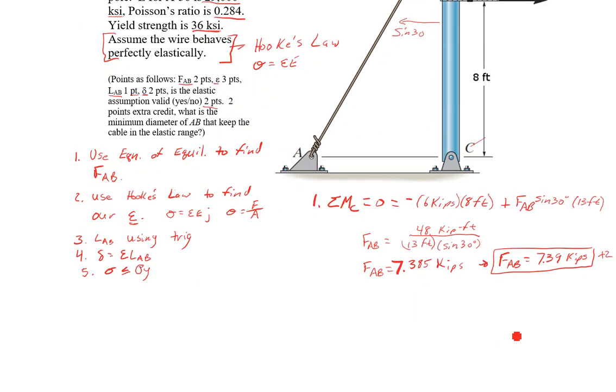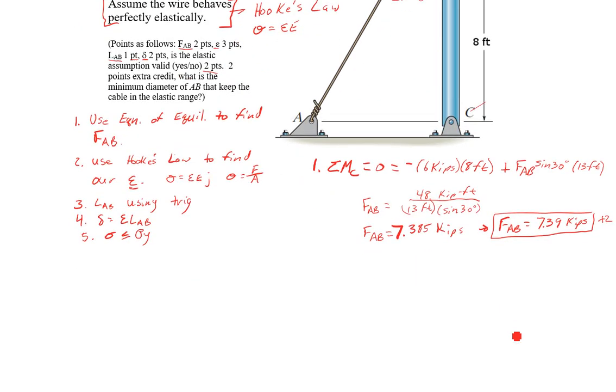The next step is to use Hooke's Law. Step two, find strain. So Hooke's Law: sigma equals E epsilon, which also equals force over area. Our force we know, our area we don't know, we know E.